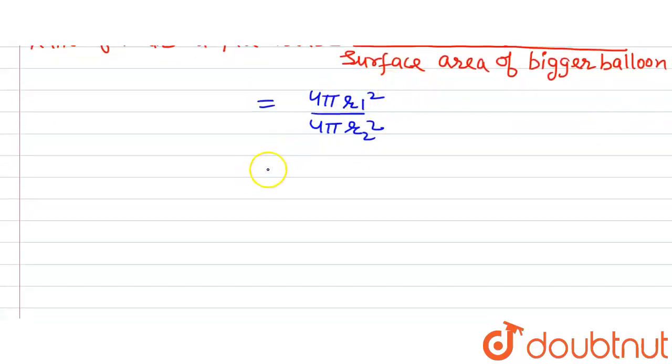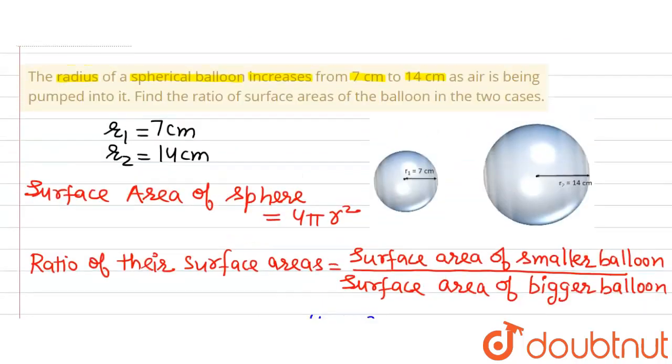Where R1 is equal to 7, so we can write 7² divided by 14².